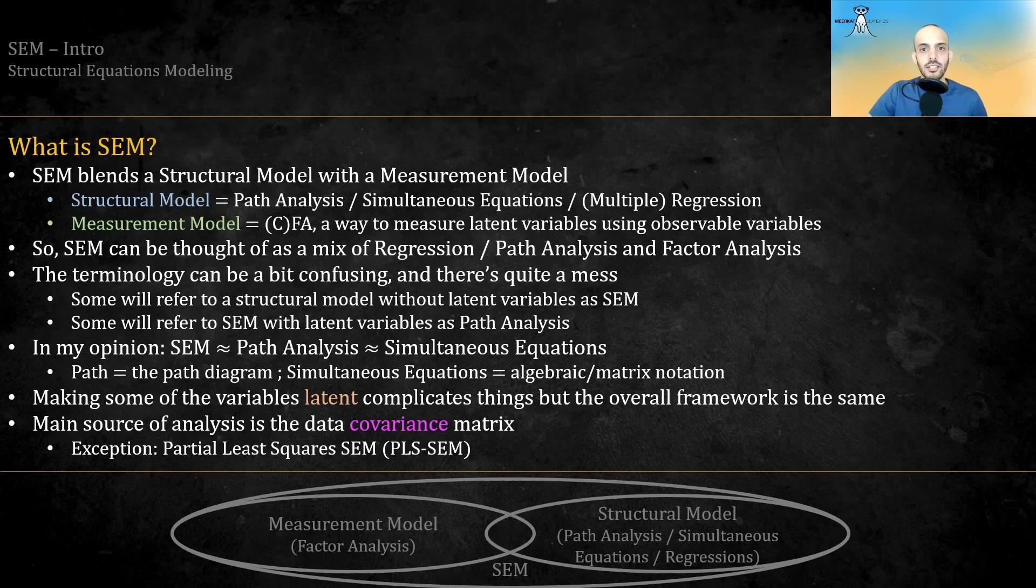Now, the terminology can be a bit confusing, and there's quite a mess. Some will refer to a structural model without latent variables as SEM, while some will refer to SEM with latent variables as path analysis. While path analysis did come before SEM, and didn't include latent variables originally, in my opinion, you can use the terms interchangeably. SEM is more or less equivalent to path analysis, and it's more or less equivalent to simultaneous equations. The path refers to the path diagram, the arrows. The simultaneous equations refer to the algebraic or matrix notation. Making some of the variables latent complicates things, but the overall framework is the same.